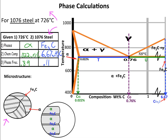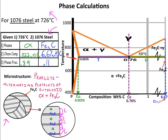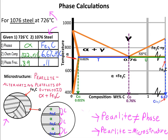Here is the microstructure for these given conditions. When gamma hits the eutectoid temperature, alpha and iron carbide nucleate as new phases. Then the alpha and carbide begin to grow as adjacent, alternating platelets, primarily from the grain boundaries. As the alpha platelets grow, they kick out carbon, which diffuses to form the iron carbide platelets, as shown in the diagram here. When the process is done, we call the microstructure pearlite. Now, pearlite is not a phase.